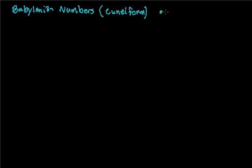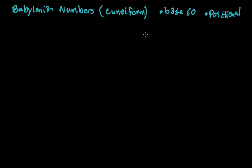This number system is a base-60 system. It's also a positional system, which means the order that these things are written in is important. You can't change the order of some of these symbols. And there are two symbols.